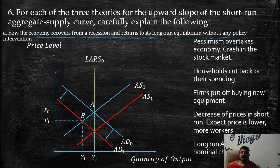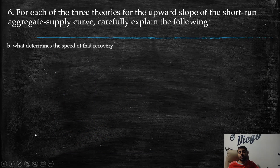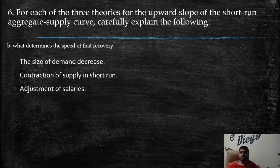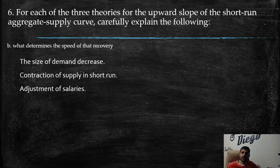Because of lower prices, producers can negotiate lower salaries. They therefore have incentives to hire more workers. As a consequence, output returns to its original level and we face lower prices, moving from P0 to P2. The speed of that recovery depends on how quickly wages adjust — this is the theory of sticky wages. If it takes more time to negotiate lower wages, the recovery will naturally be slower.